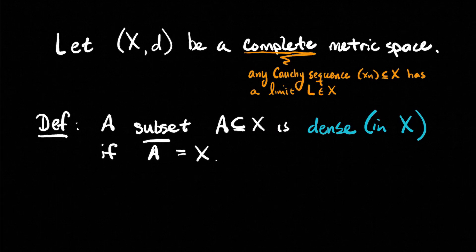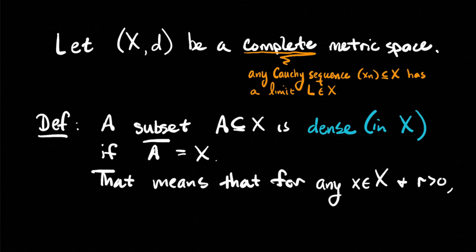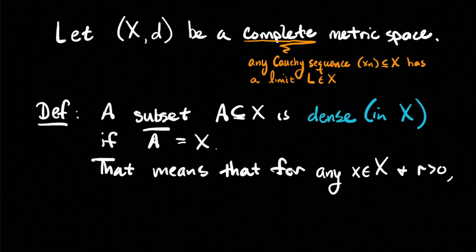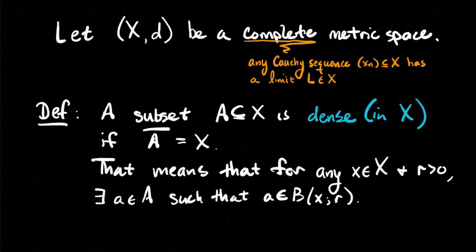A subset A of X is said to be dense in X if the closure of A equals the whole set X. In other words, the smallest closed set containing A is just the whole set X. That means that for any element x in the space and any positive real number r, there exists an element a from A such that a belongs to the ball centered at x of radius r.